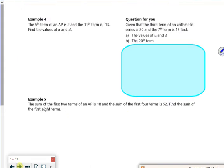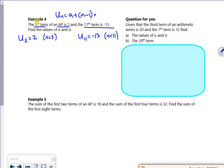So it tells us the fifth term in AP is 2. So I know that U₅ is 2. That's what I need to learn. And it tells us the eleventh term is minus 13. So U₁₁ is -13. Now these are all the terms, aren't they? So I'm going to use the terms. So I'm using Uₙ is a plus n minus 1d.